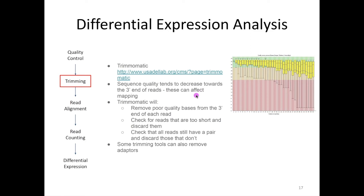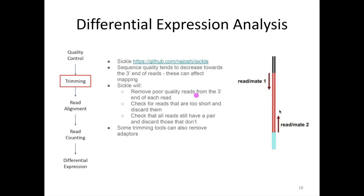The other thing trimming tools can do is remove adapter sequence. In a paired-end fragment structure, the red is the fragment of cDNA you're sequencing with blue and black adapters on the ends. We use the adapters to prime and sequence a short piece from each end. But if your fragment is short, you can start sequencing and go all the way through and start sequencing the adapter at the other end. Trimming tools can find and get rid of that adapter contamination. It's always important to run a trimming tool because it really helps to optimize your alignment.